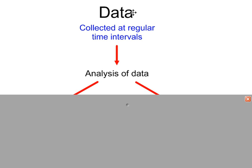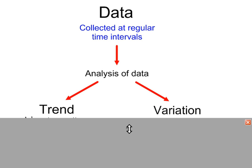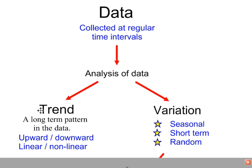Data collected at regular time intervals is a time series. The data is analyzed to work out any underlying trend. Trend is a long-term pattern in your data. You may find that your data is increasing or decreasing, either a linear increase or decrease, or a non-linear increase or decrease.